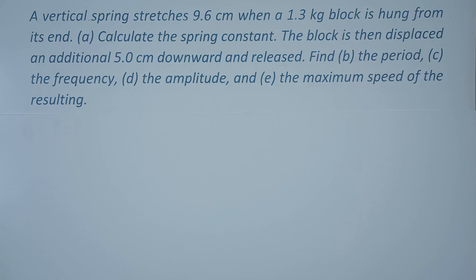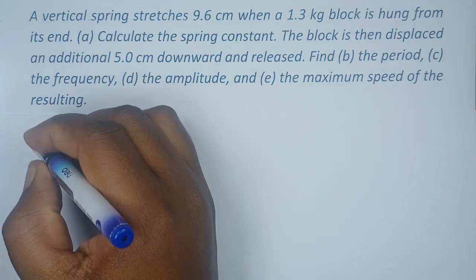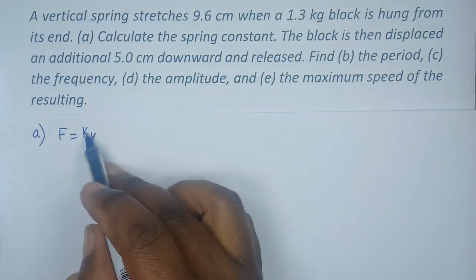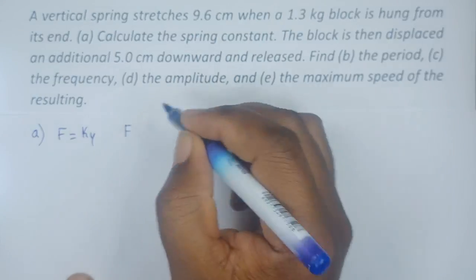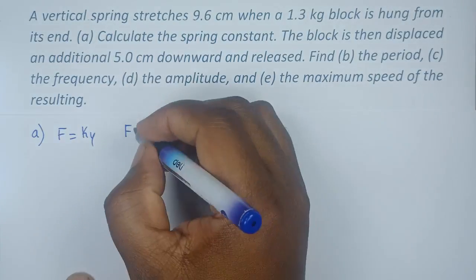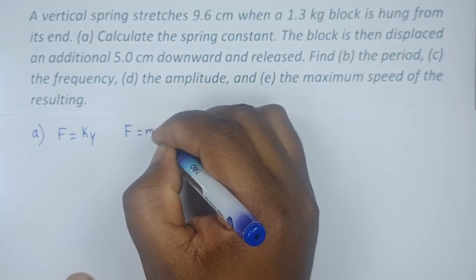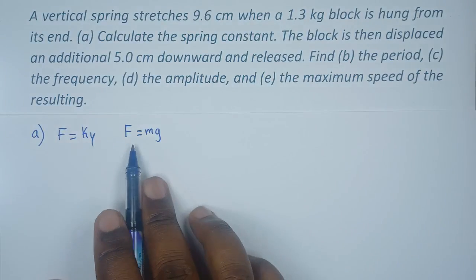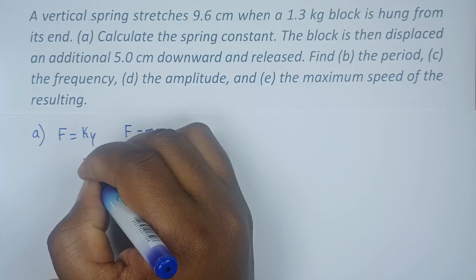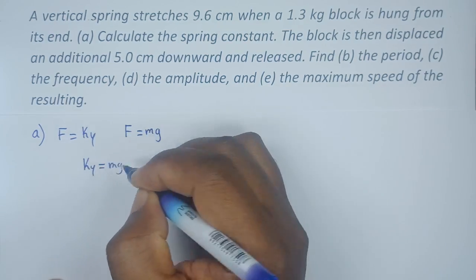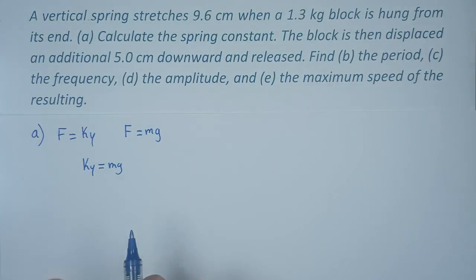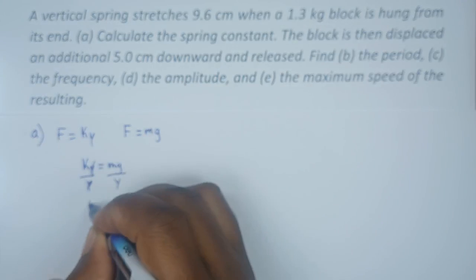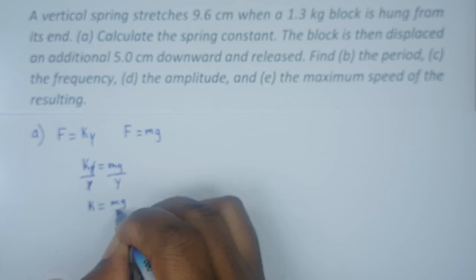We know that the restoring force is given by ky, where k is the spring constant, and the weight force of this particular block since it's hanging vertically will be given by mass times acceleration due to gravity, mg. We can simply combine these two by saying if this is the force and this is the weight force, then ky equals mg. Since we're looking for the spring constant, we divide both sides by y so that k equals mg over y.